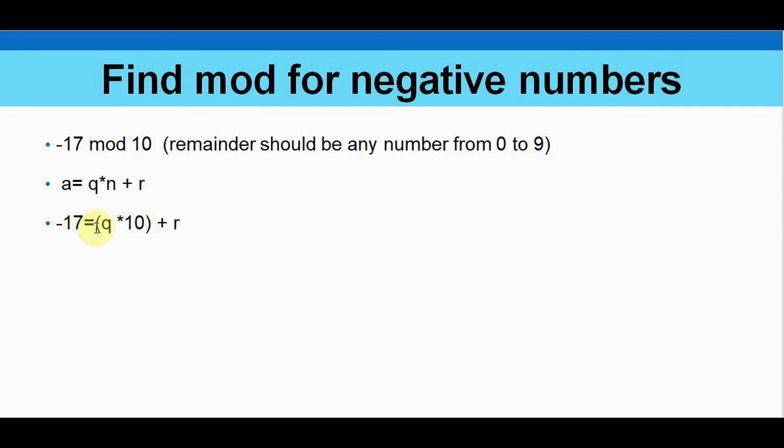Now by multiplying this q star 10 plus r we should get a negative number. So we have to substitute the value of q and r. You just have to check the r value should be a positive number. It can be any number from 0 to 9. r must be a positive number.